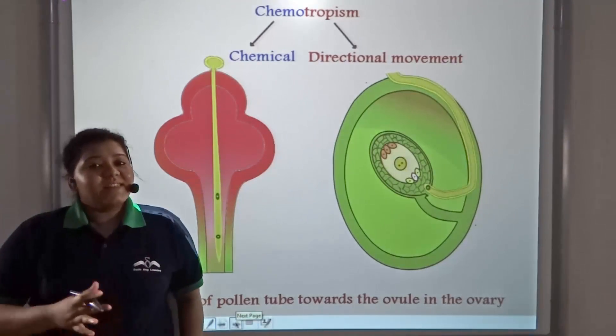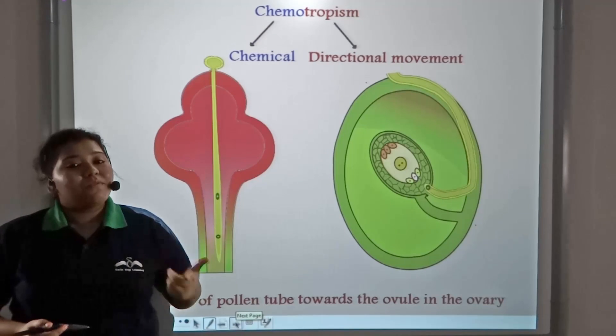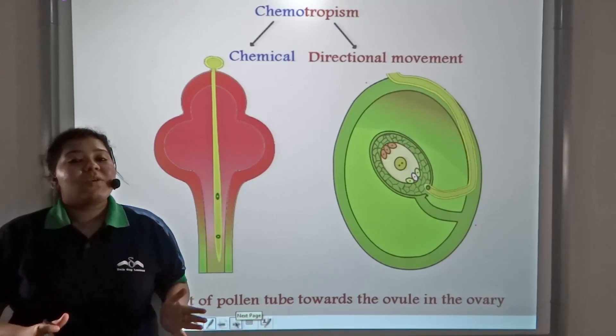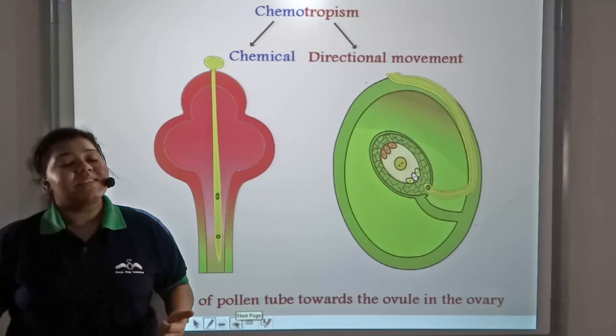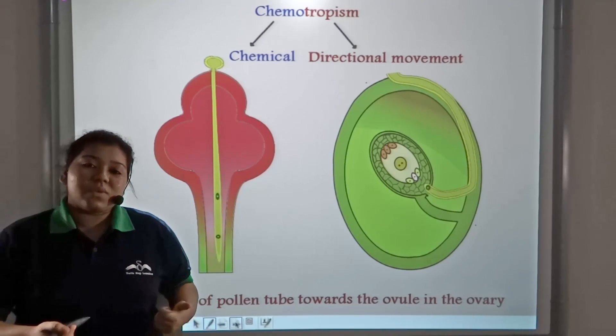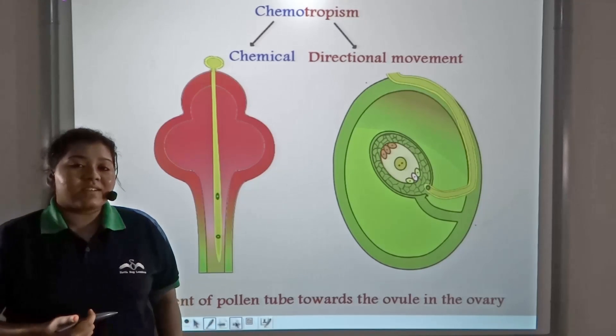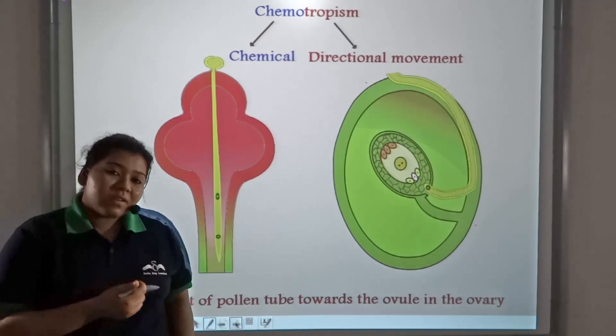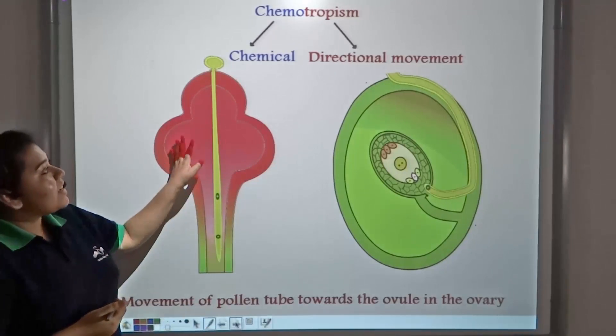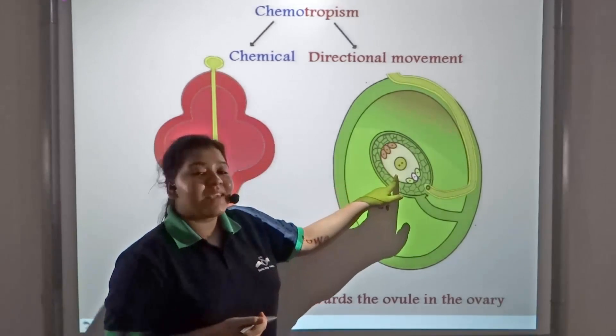So far, we have discussed environmental triggers such as light, water, and soil which cause directional movement in plants. But there are other movements in plants which are not triggered by environmental factors. One such movement is the movement of pollen tubes towards the ovule in the ovary.